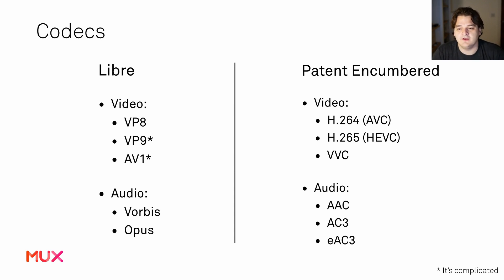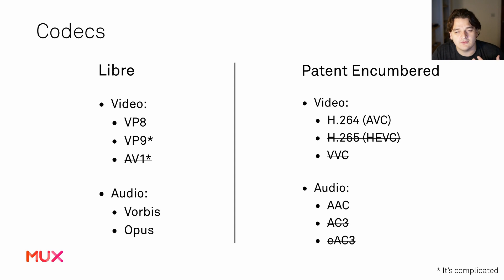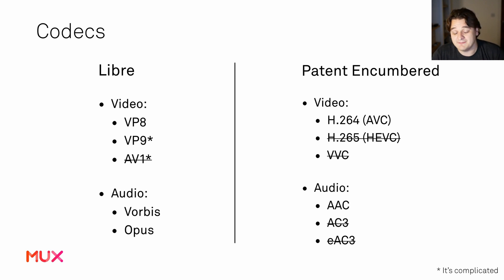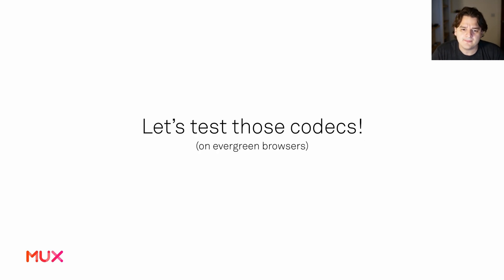There are a few libre codecs: VP8, VP9, and AV1, a much more modern codec. There are also patent-encumbered codecs. When building a system, you can quickly eliminate many: AV1 just isn't quite there yet — it has browser support but encoding complexity and time are very high, so it's not feasibly deployable. h.265 doesn't exist in any browsers, h.266 isn't even off the specification table, and the same goes for certain audio codecs.